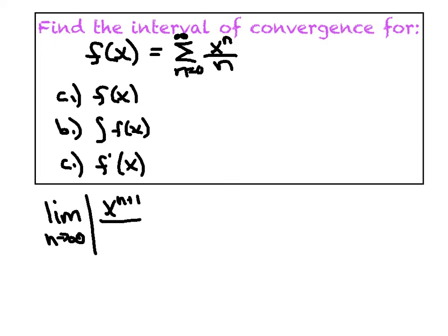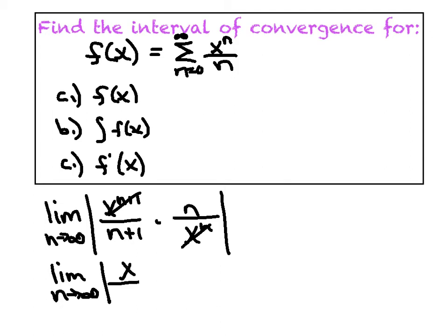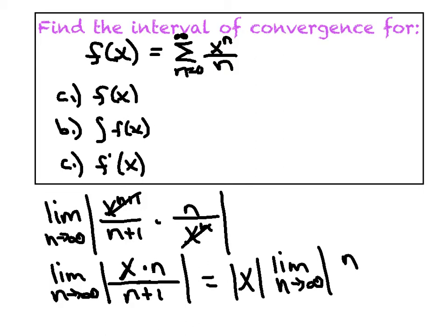Here's my n plus first term multiplied by the reciprocal of the nth term. I'll cancel just a little bit here. We can kill those bears and get X to the first. We still have our n on top. We still have our n plus one on the bottom. So, here's where I like to factor that X out and we'll multiply that by the limit as n approaches infinity, n over n plus one.